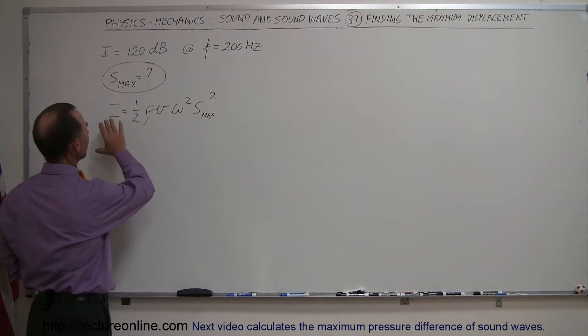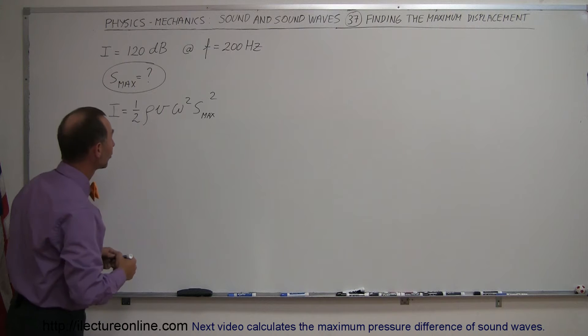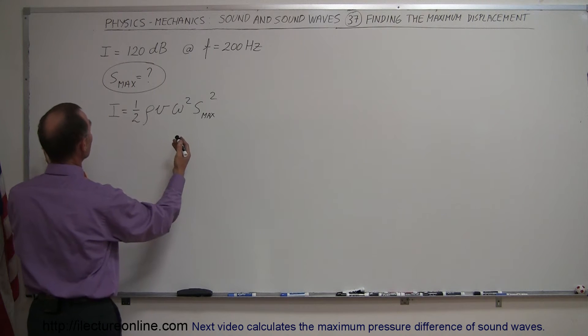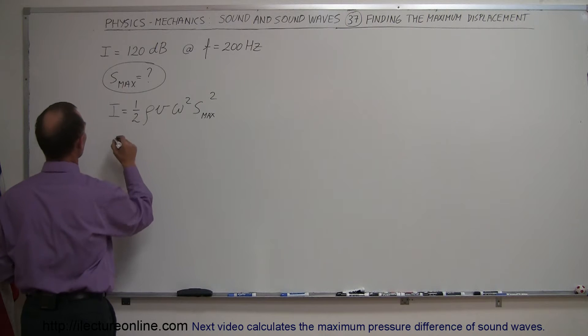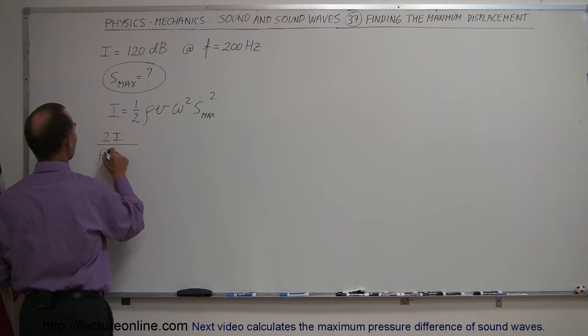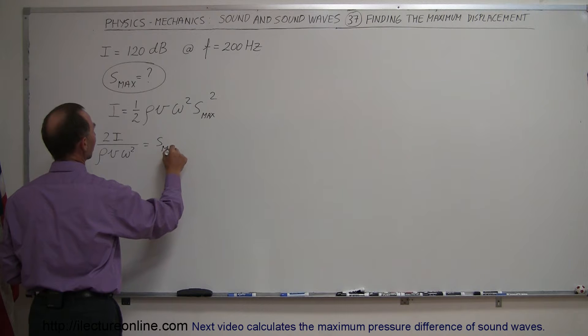We're going to take this very same equation where we calculated the intensity, now we're going to do it backwards and find the maximum displacement. First we're going to multiply both sides by 2 and divide both sides by rho, v, and omega squared. This gives us 2I divided by the density of air, the velocity of sound in air, and the angular frequency squared equals s_max squared.